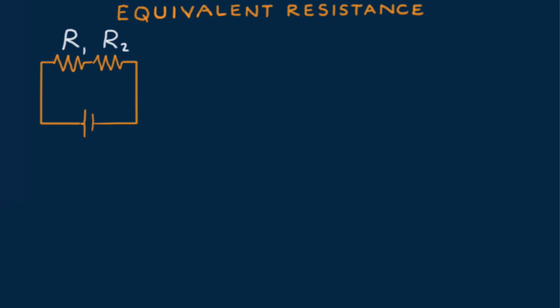It's often desirable to know what single resistor could replace the two resistors and result in the same current and same energy drawn from the battery or other voltage source. This is the equivalent circuit resistance.